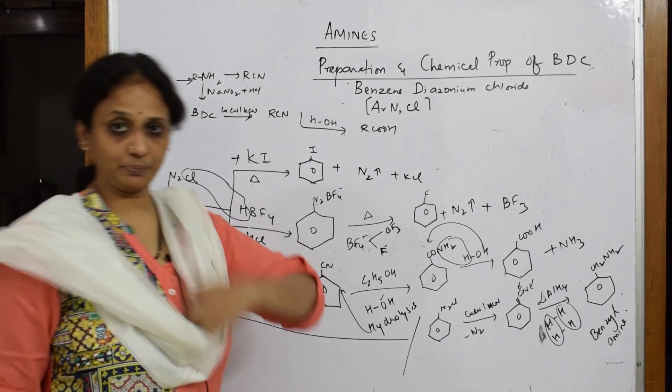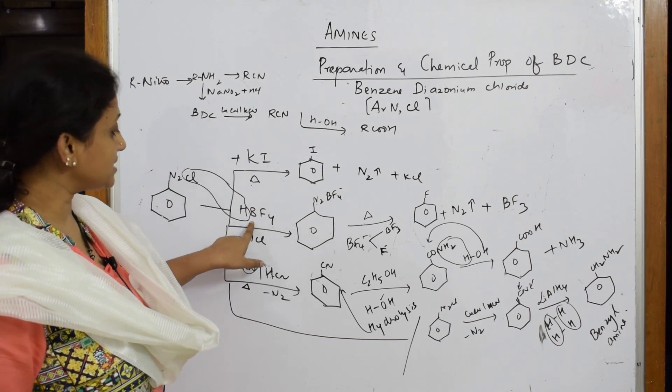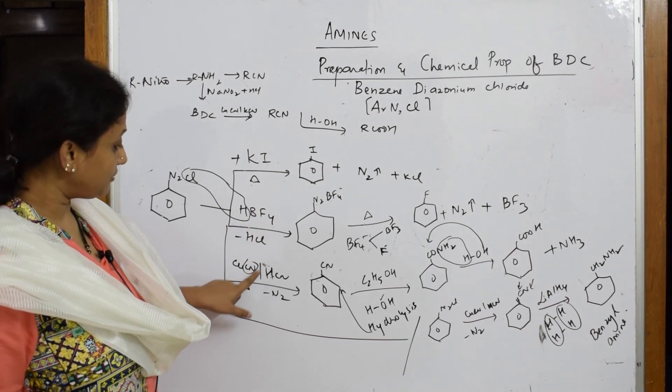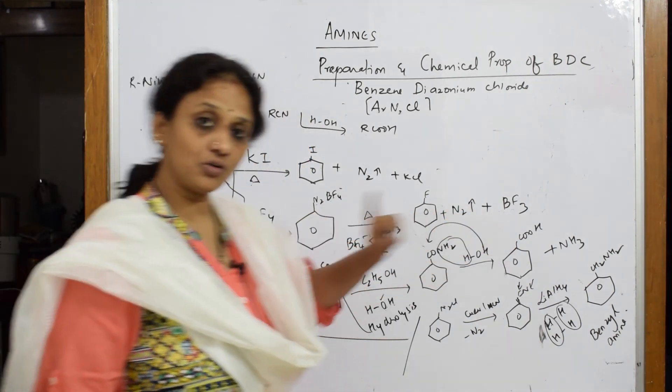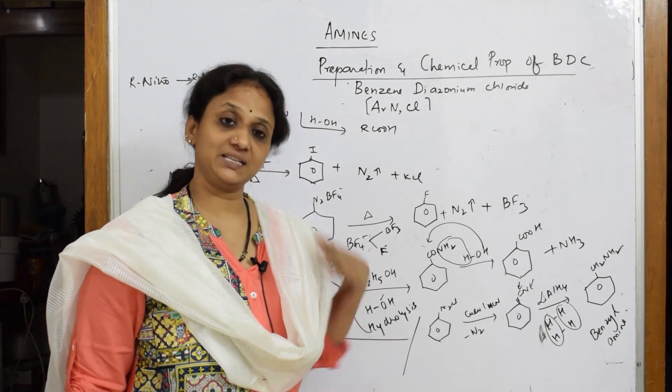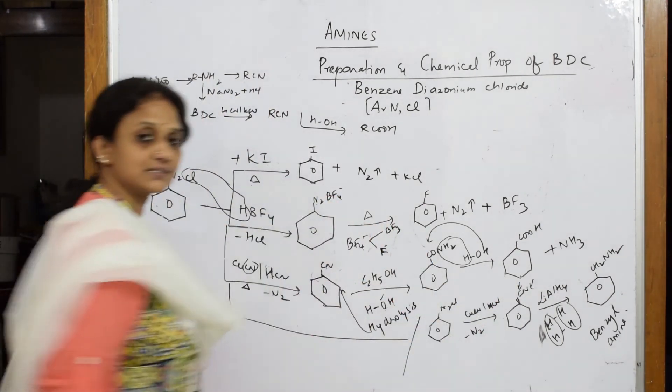First, if you want to prepare iodobenzene, this is the reagent. Fluorobenzene, this is the reagent. If you have to convert BDC to acid or if you want to convert BDC to benzyl amine, this is the step. This is the first step. This is the second step.